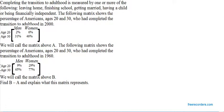The problem says completing the transition to adulthood is measured by one or more of the following: leaving home, finishing school, getting married, having a child, or being financially independent.